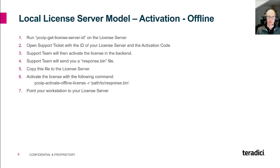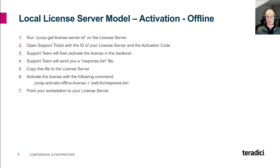You have to copy this response.bin file back to your license server. Once copied, you activate the license with the following command: 'pcoop-activate-offline-license'. You use the parameter '-r' and point the command to the directory where you have copied the response.bin file. This process has to be done every time additional licenses are purchased and is considered the most complicated and time-consuming way of activating a license.